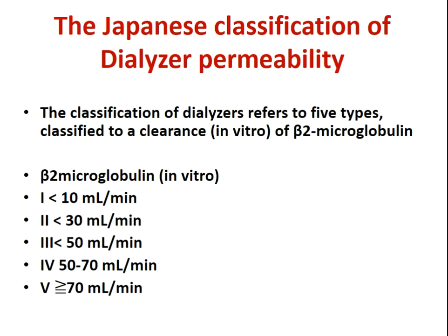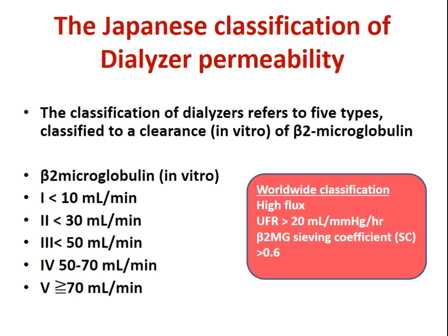The Japanese classification of dialyzer permeability depends not only on small molecule clearance but also on beta-2 microglobulin clearance (middle molecules), classified on a scale from 1 to 5, with 5 having the highest clearance value for beta-2 microglobulin. Another classification of high-flux dialysis depends on an ultrafiltration rate above 20 mL/mmHg/hour and a beta-2 microglobulin sieving coefficient greater than 0.6.